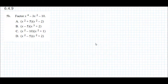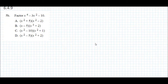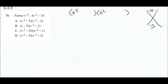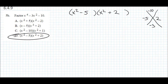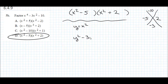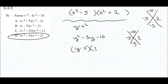Next example: factor x⁴ - 3x² - 10. Again we treat it like a quadratic — we need a product of -10 and a sum of -3: that's -5 and 2. So it factors as (x² - 5)(x² + 2), answer D. You could also use the substitution y = x², rewrite as y² - 3y - 10, factor as (y - 5)(y + 2), then substitute back x².